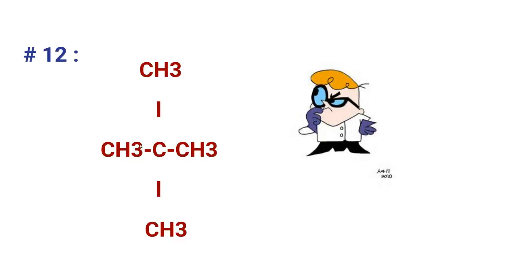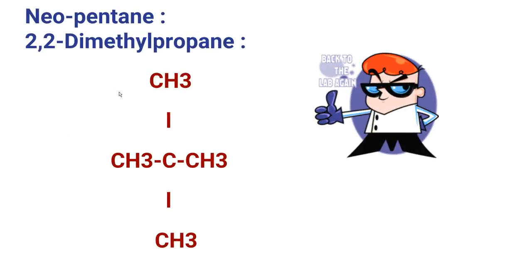This is the last compound — again a very easy one. The name of this compound is 2,2-dimethylpropane, also known as neopentane. It is the simplest alkane having a quaternary carbon — a carbon directly attached to four other carbons. There are five carbons in total; the longest chain consists of three carbons making it propane, with two methyl groups on the second carbon.